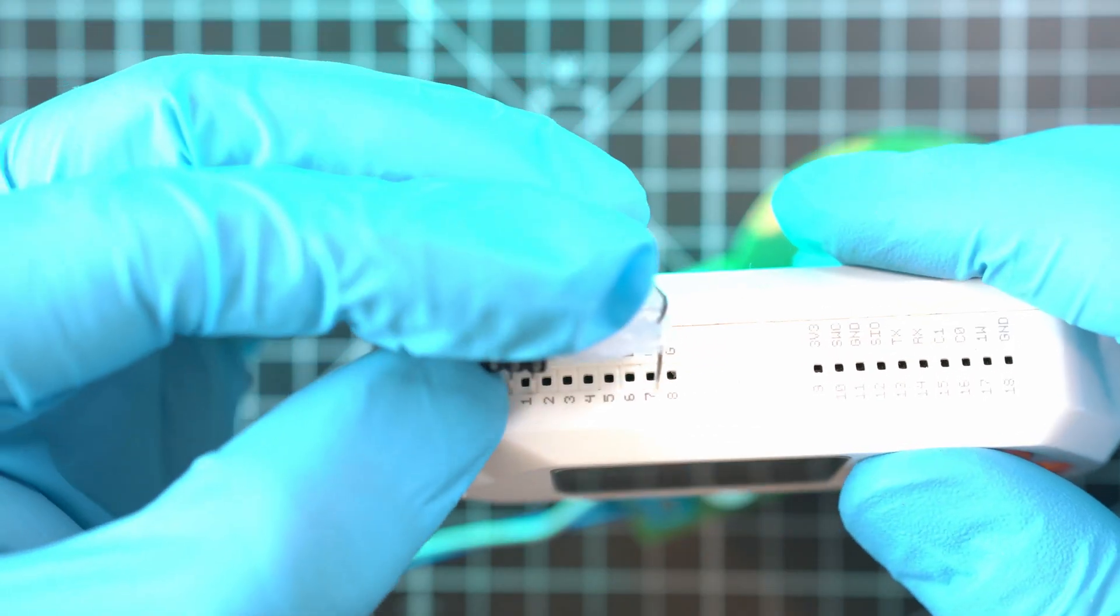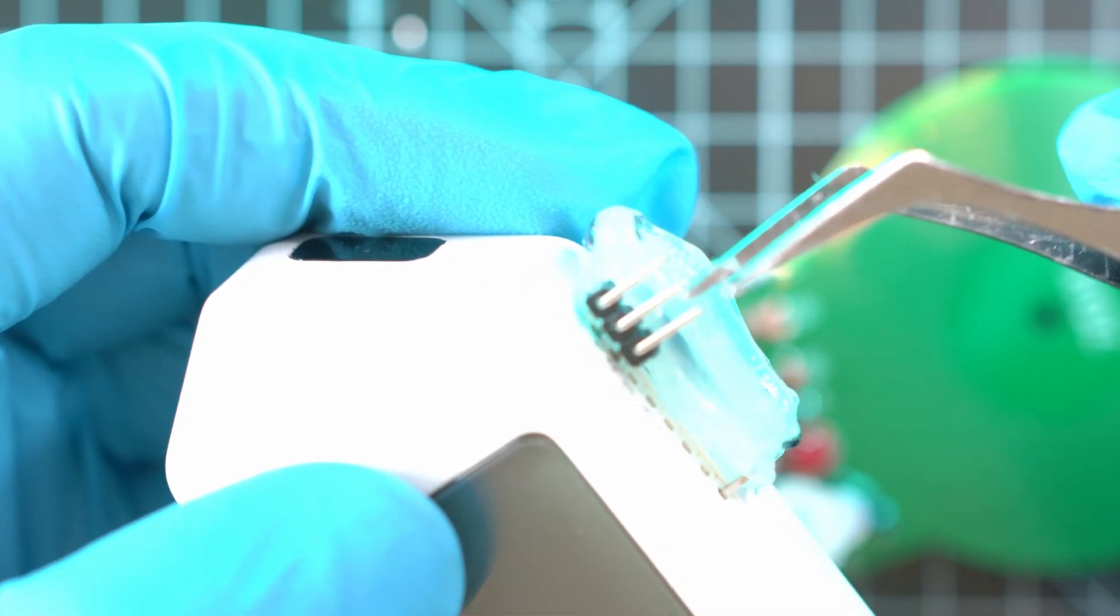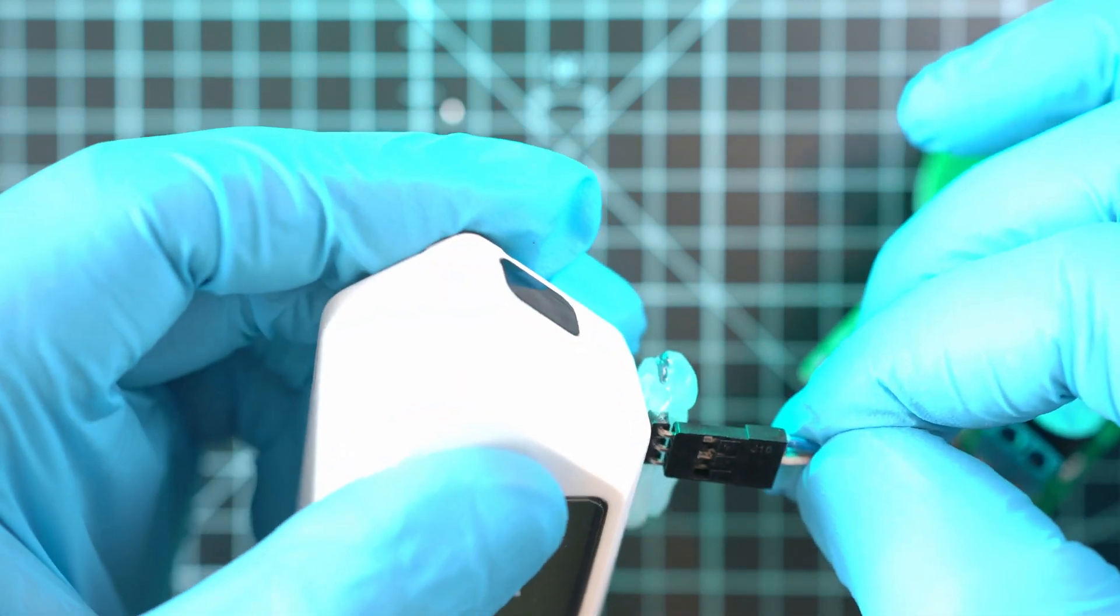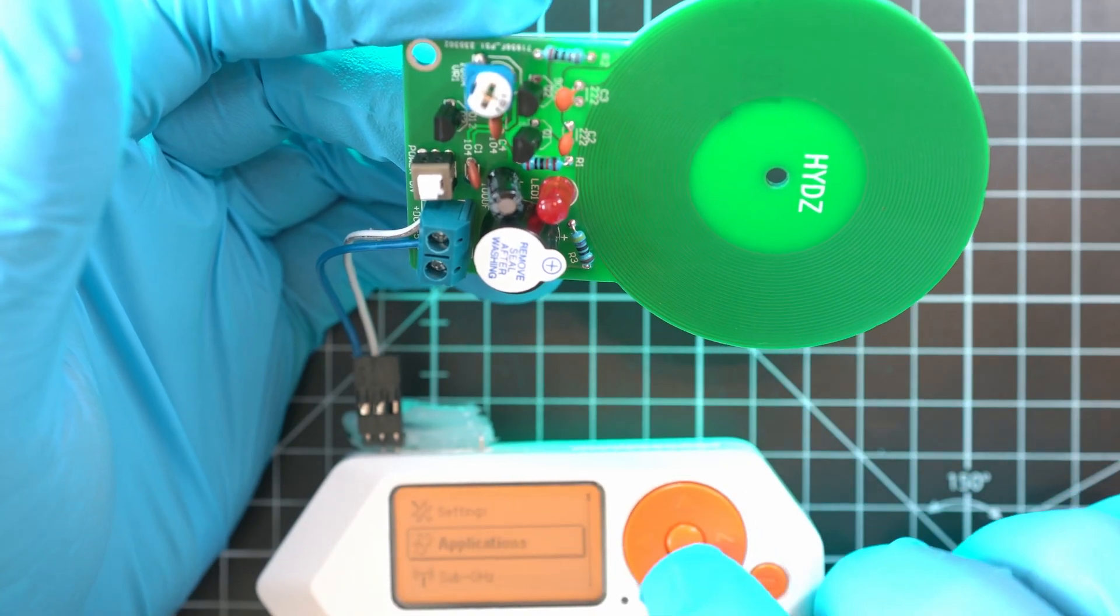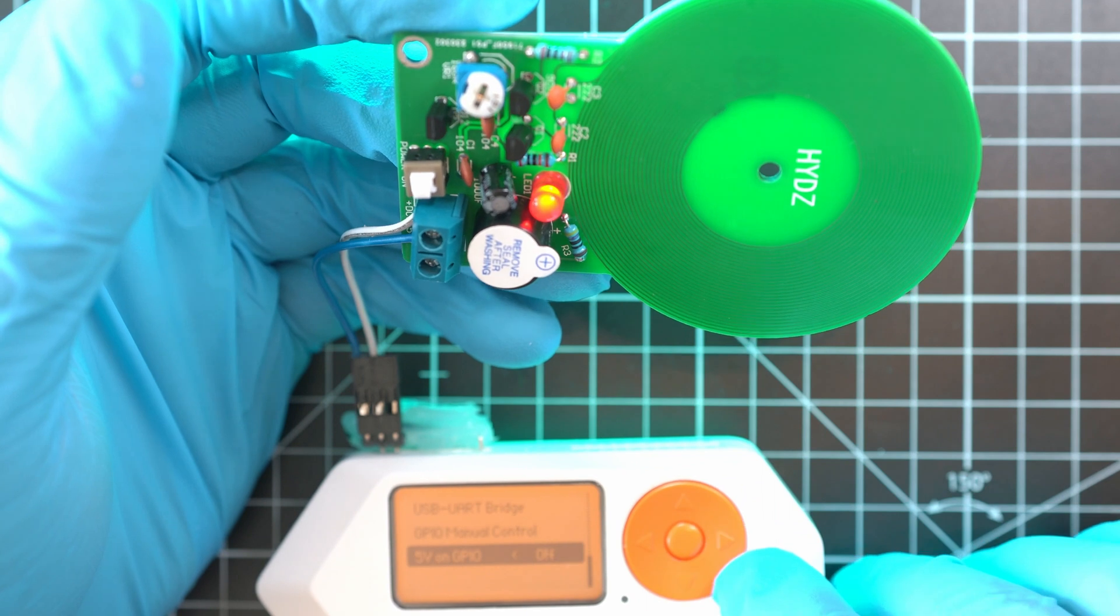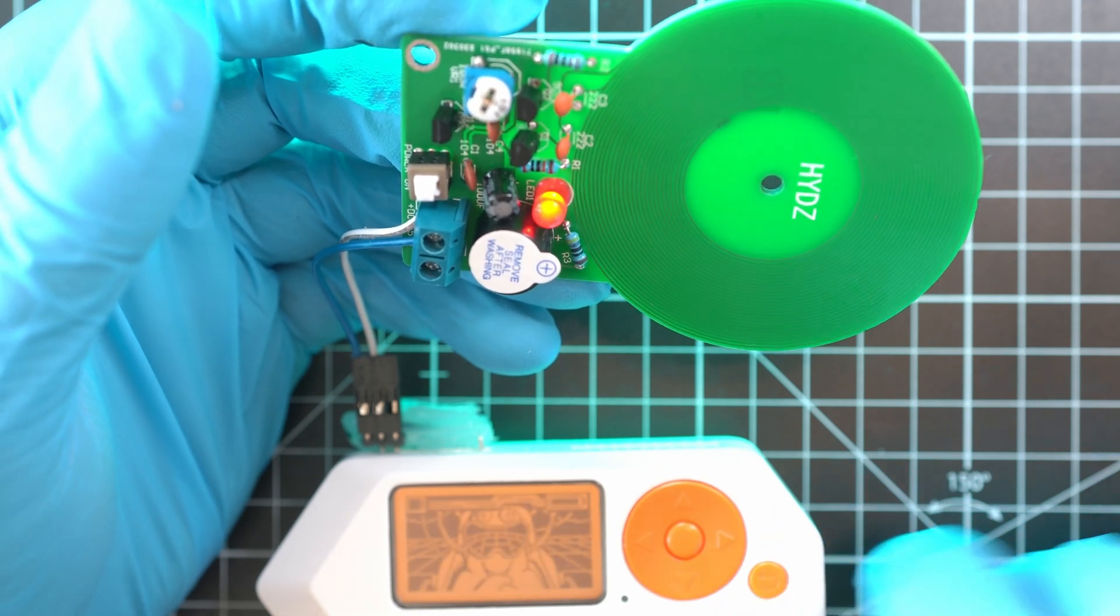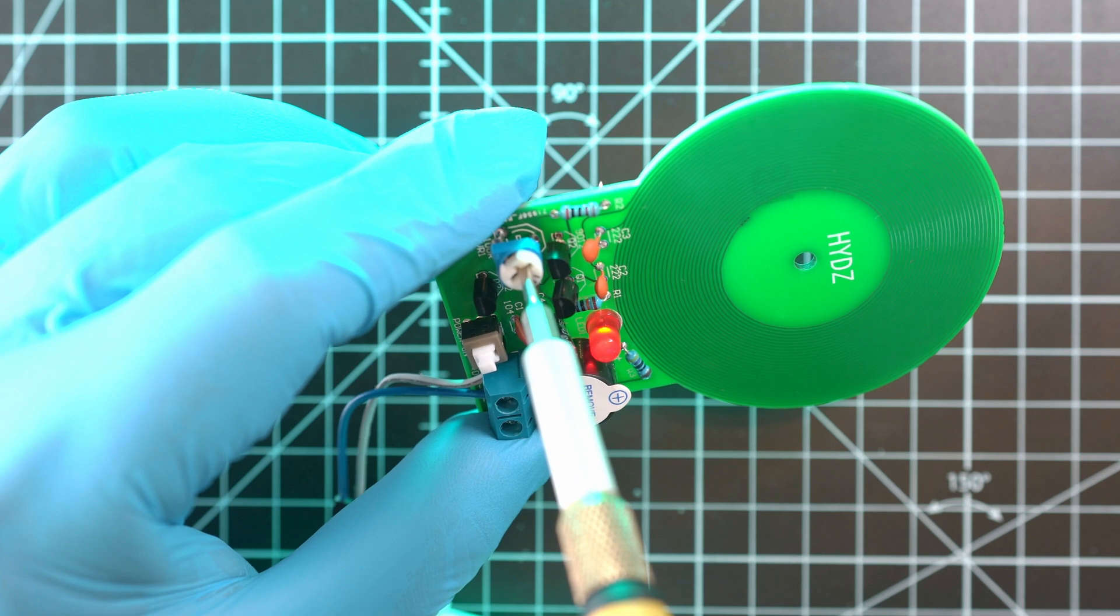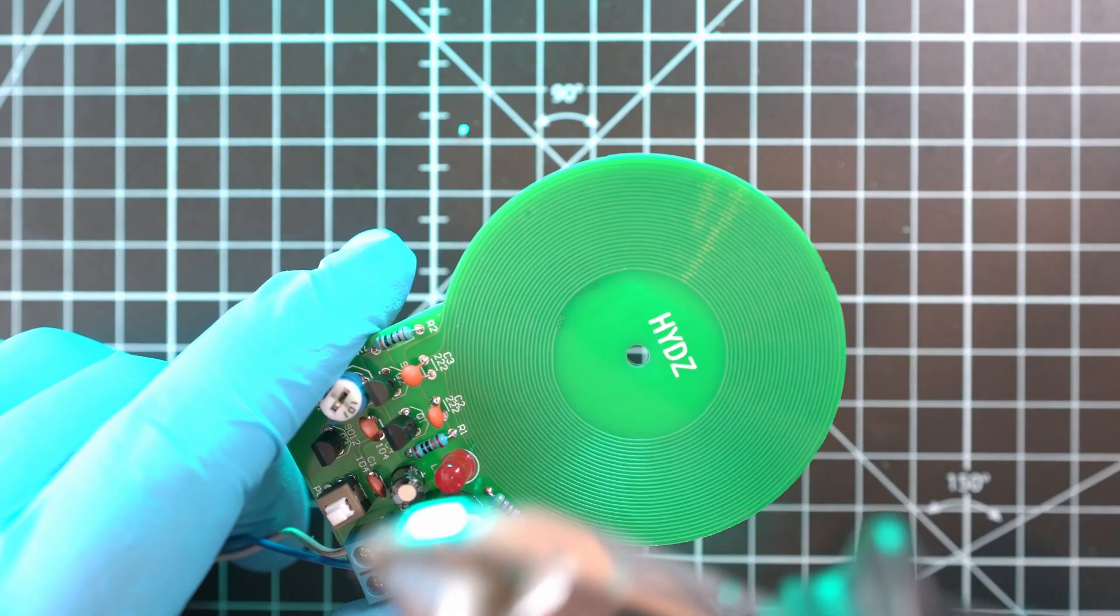This metal detector kit cost like 2 bucks and it is linked in description below. Now I have to turn on 5 volts on GPIO and boom, metal detector is on, but it is beeping and needs to be adjusted first with this potentiometer.